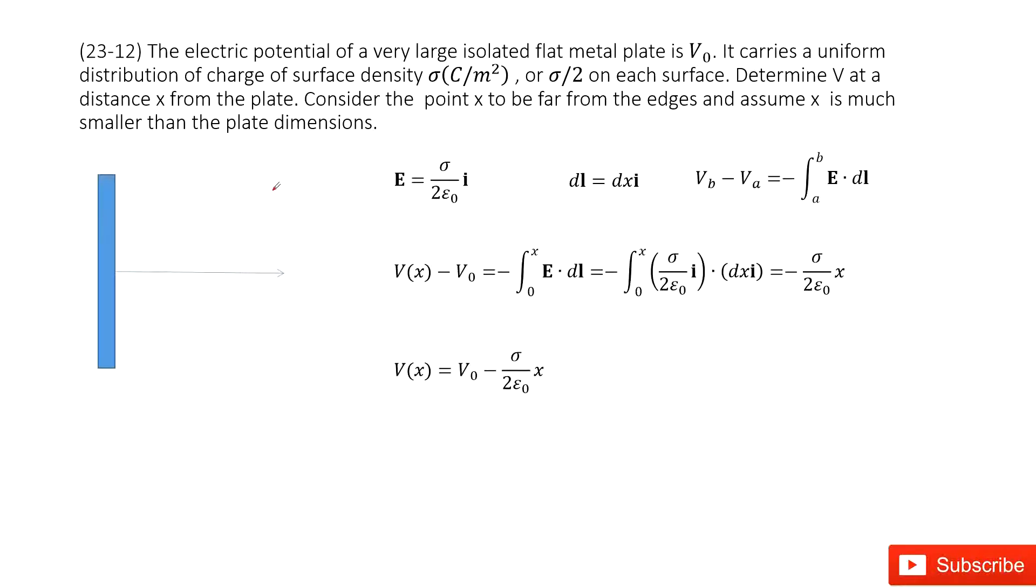So we can see we have a very large isolated flat metal plate. The potential is V₀ at one surface, and we know the charge density is σ divided by 2 on each surface.